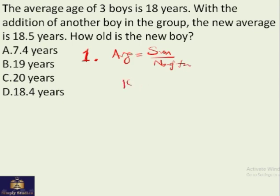So we say average is 18. It means the sum of ages of three boys must be 18 times 3, which is 54.